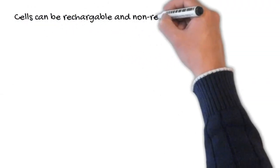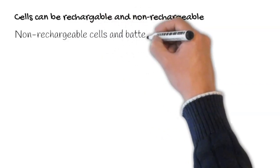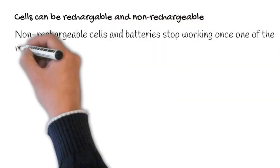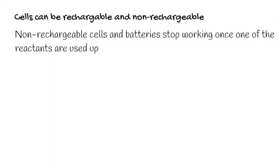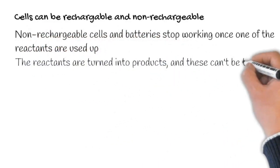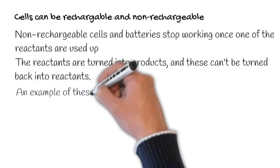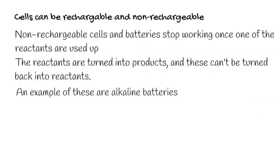Cells can be rechargeable and non-rechargeable. Non-rechargeable cells and batteries stop working once one of the reactants are used up. The reactants are turned into products and these can't be turned back into reactants. An example of these are alkaline batteries.